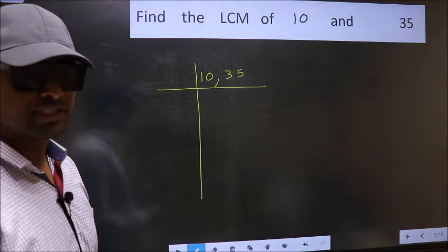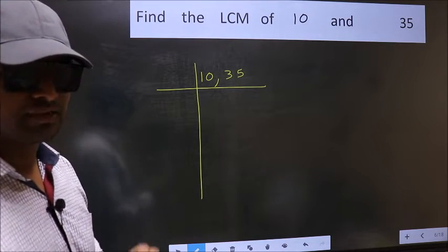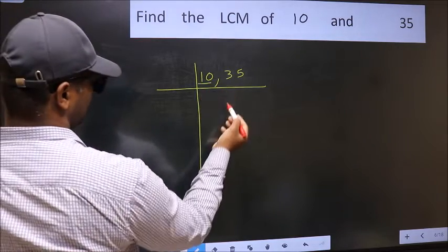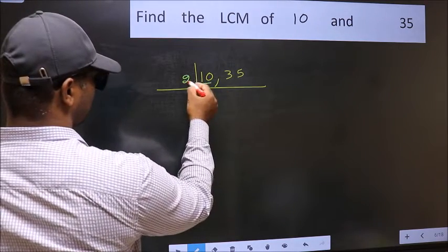Now focus on the first number, which is 10. 10 is 2 times 5, which equals 10.